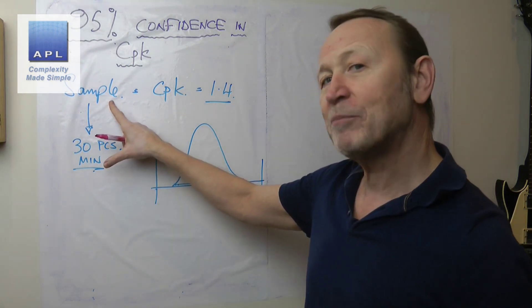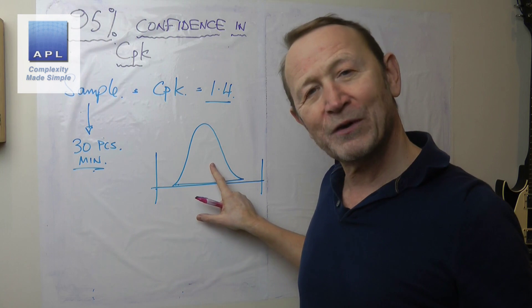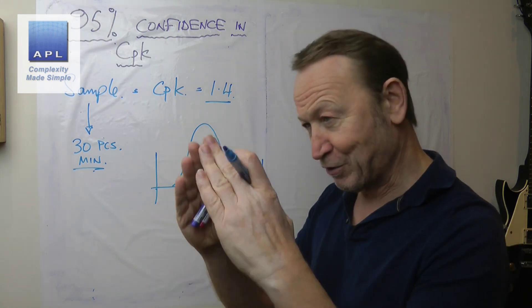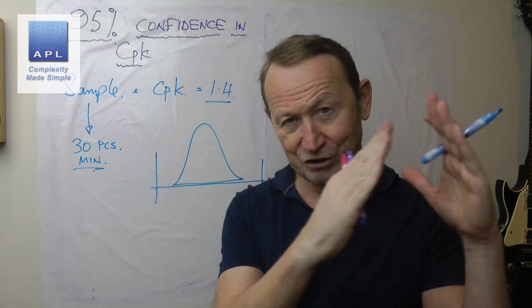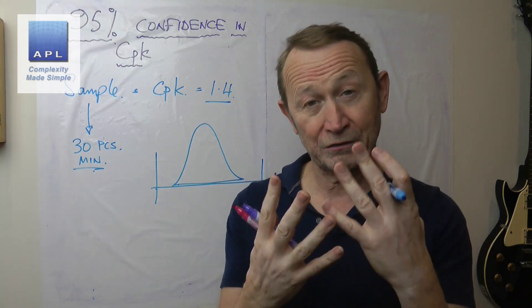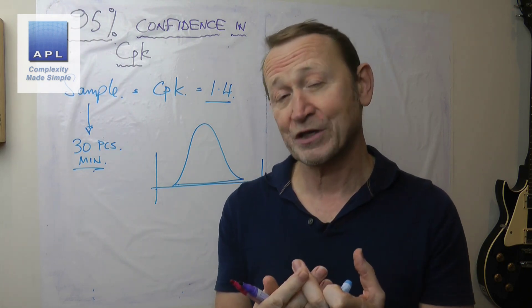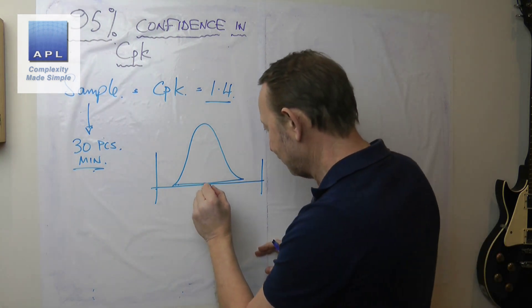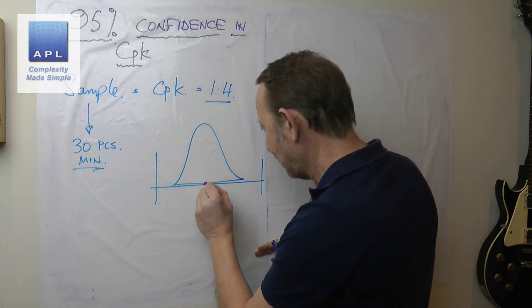Of course, what's going on is we're sampling, so we have sample error. Every time we take a sample out of this process, it could be in a slightly different place. So how can we ever know what the real average of our process is?